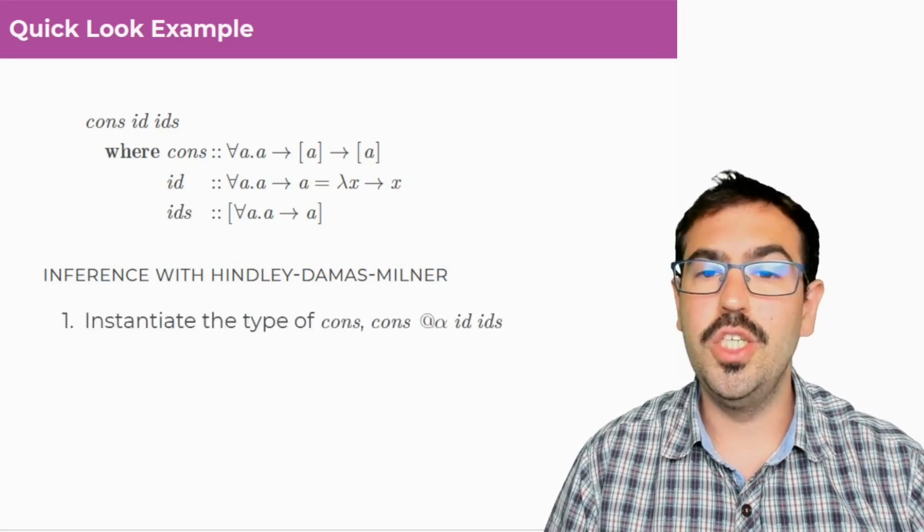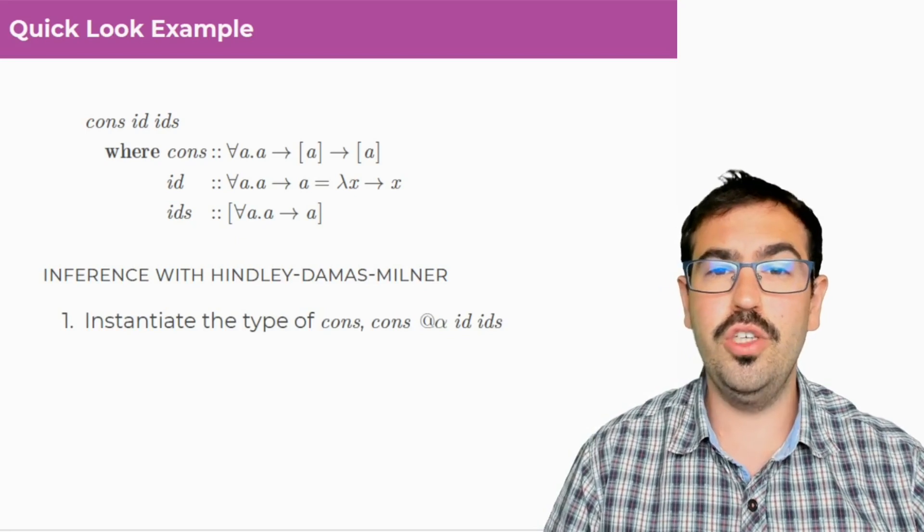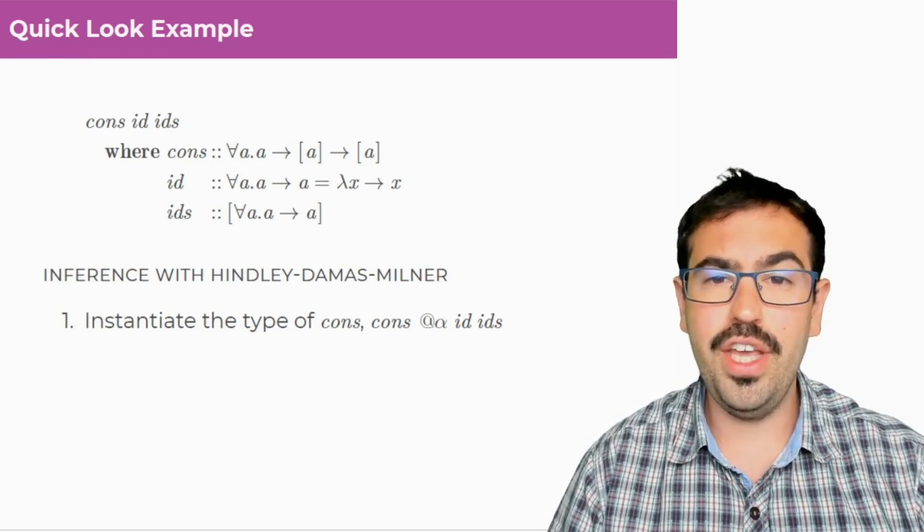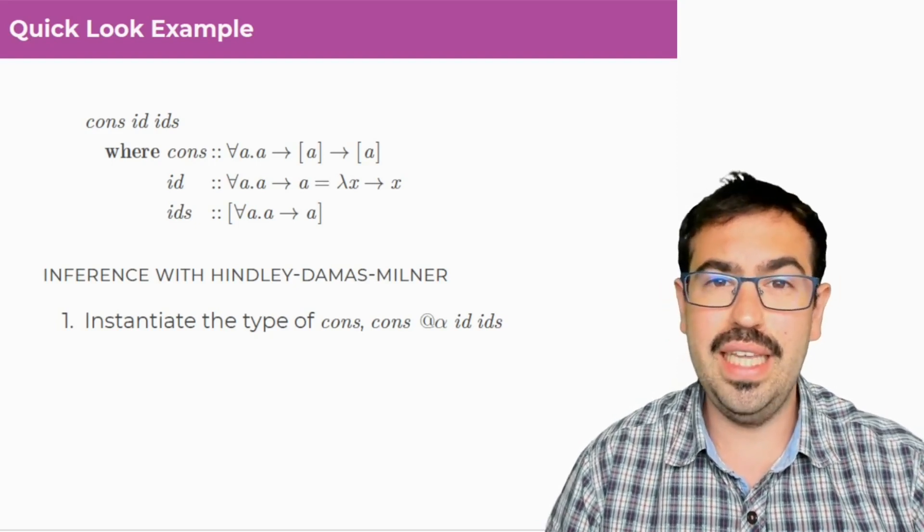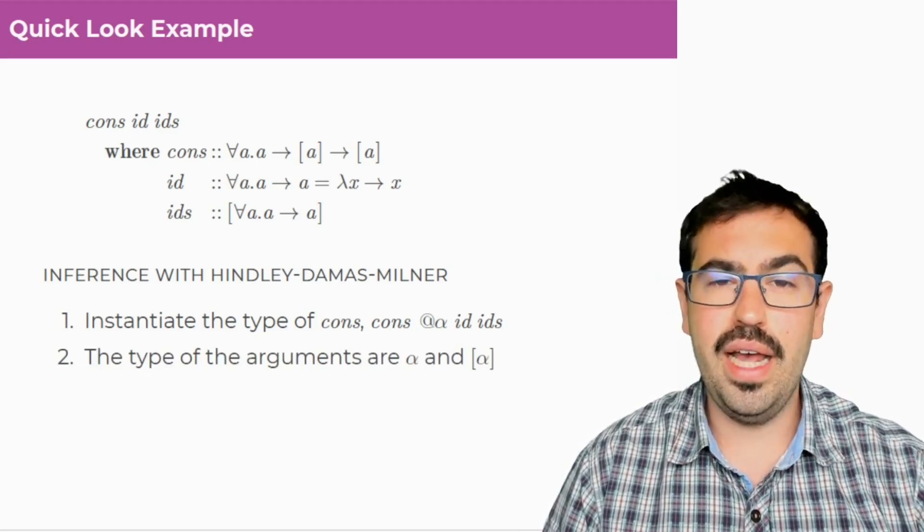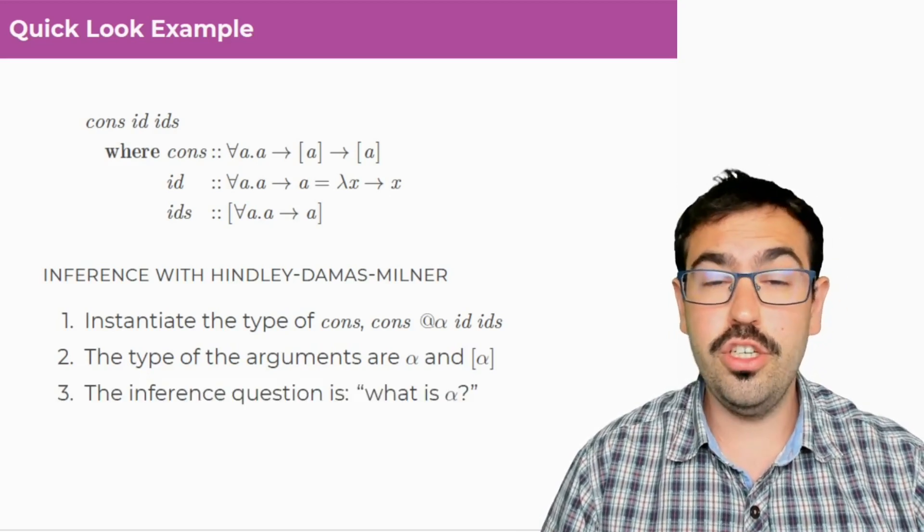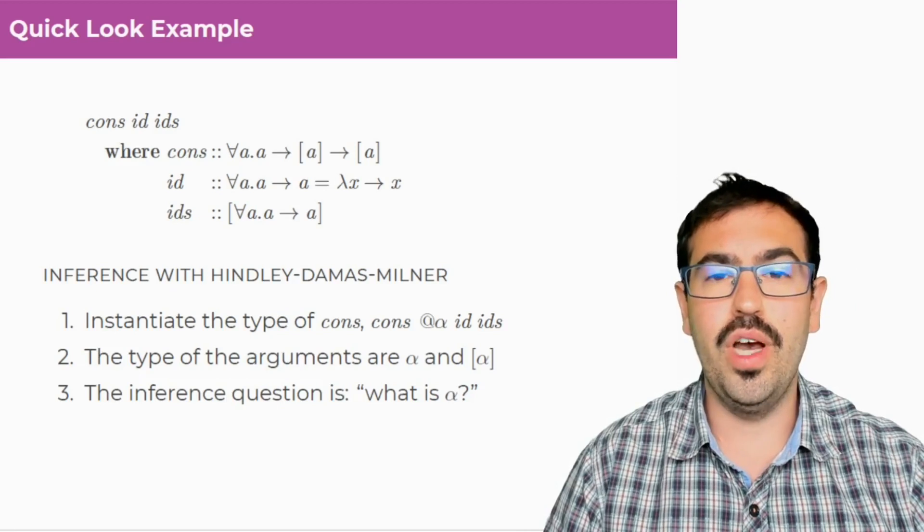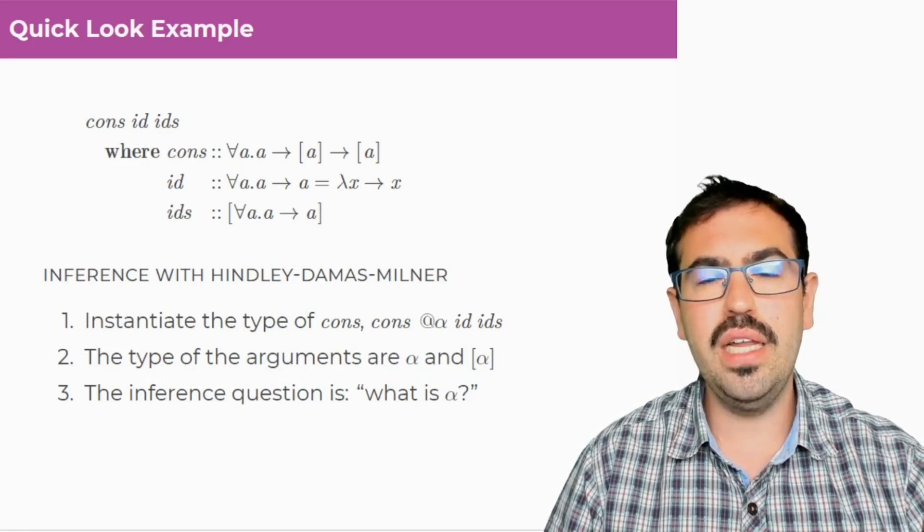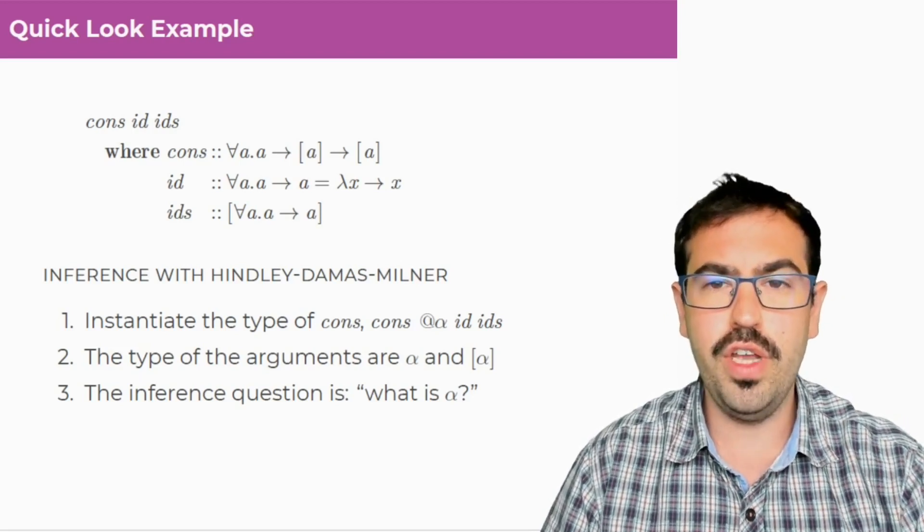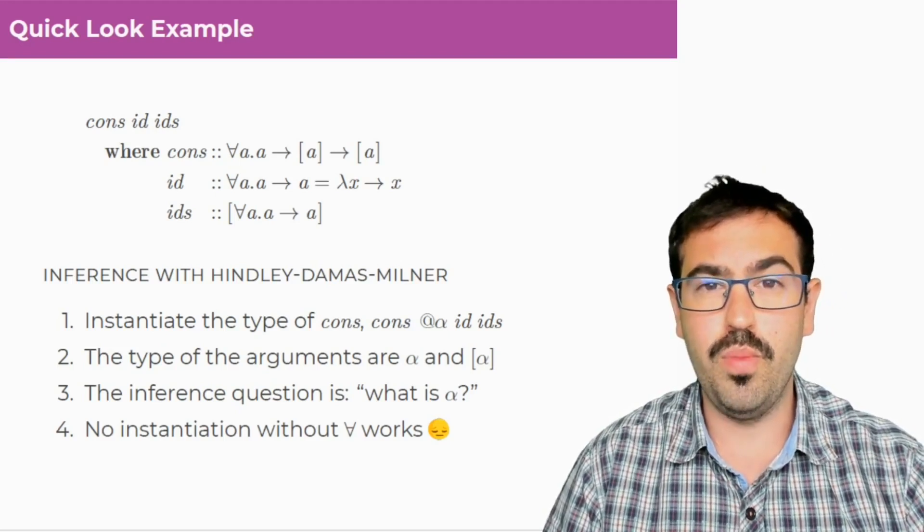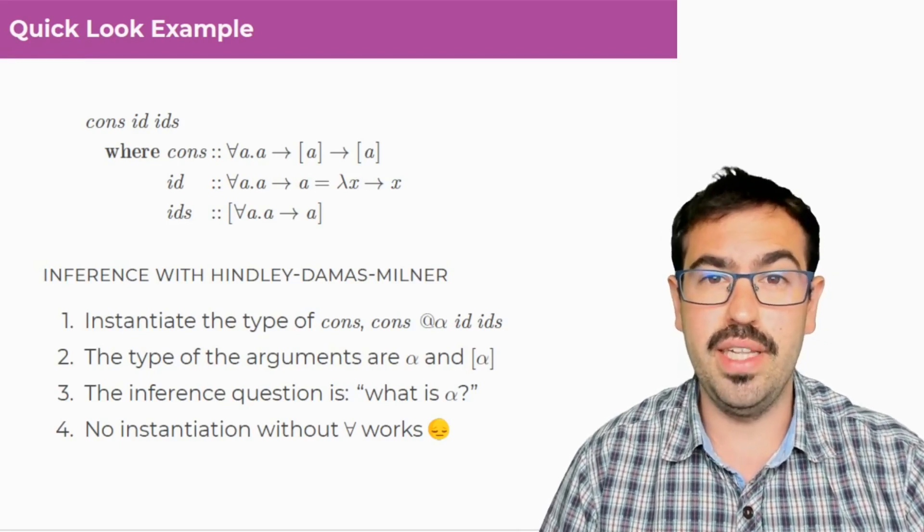If you do inference with Hindley-Damas-Milner, what will happen is that you instantiate the type of cons and you're introducing cons applied to one type variable you don't know. I'm going to call it alpha here, and then you have the argument ID and IDs. The type of the arguments are then alpha and list of alphas. The question now is what is alpha, and if you have a type inference engine, the type inference will do unification and try to figure this out, but the thing is no instantiation without for all type works, so this example is rejected by Hindley-Damas-Milner.